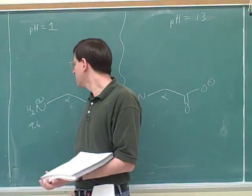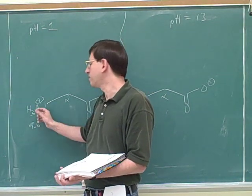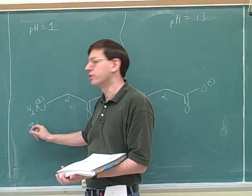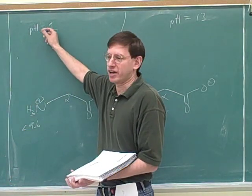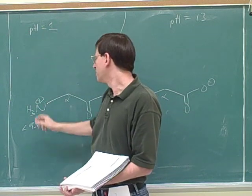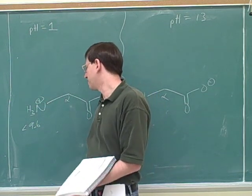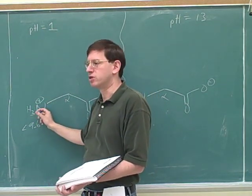Going back to the nitrogen, when will this be the main form of the nitrogen? When the pH is lower than 9.6. That's right. Of course, I didn't leave any room for error here. This is way lower than 9.6. But when we are lower than 9.6, this would be the major form of this nitrogen.